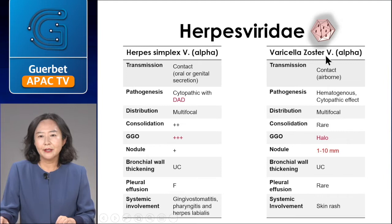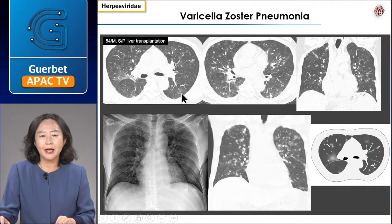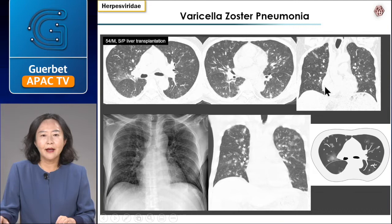Herpesviridae also includes varicella zoster pneumonia. Varicella zoster virus spreads hematogenously. CT scan shows multifocal small nodules with surrounding halo. This is a 54-year-old man presenting with fever and cough who underwent liver transplantation three years ago. Varicella zoster pneumonia presents as multifocal 1–10 mm well- or ill-defined small nodules with surrounding halo or ground-glass opacities. This pneumonia occurs two to three days after developing skin eruption, especially in immune-compromised hosts.